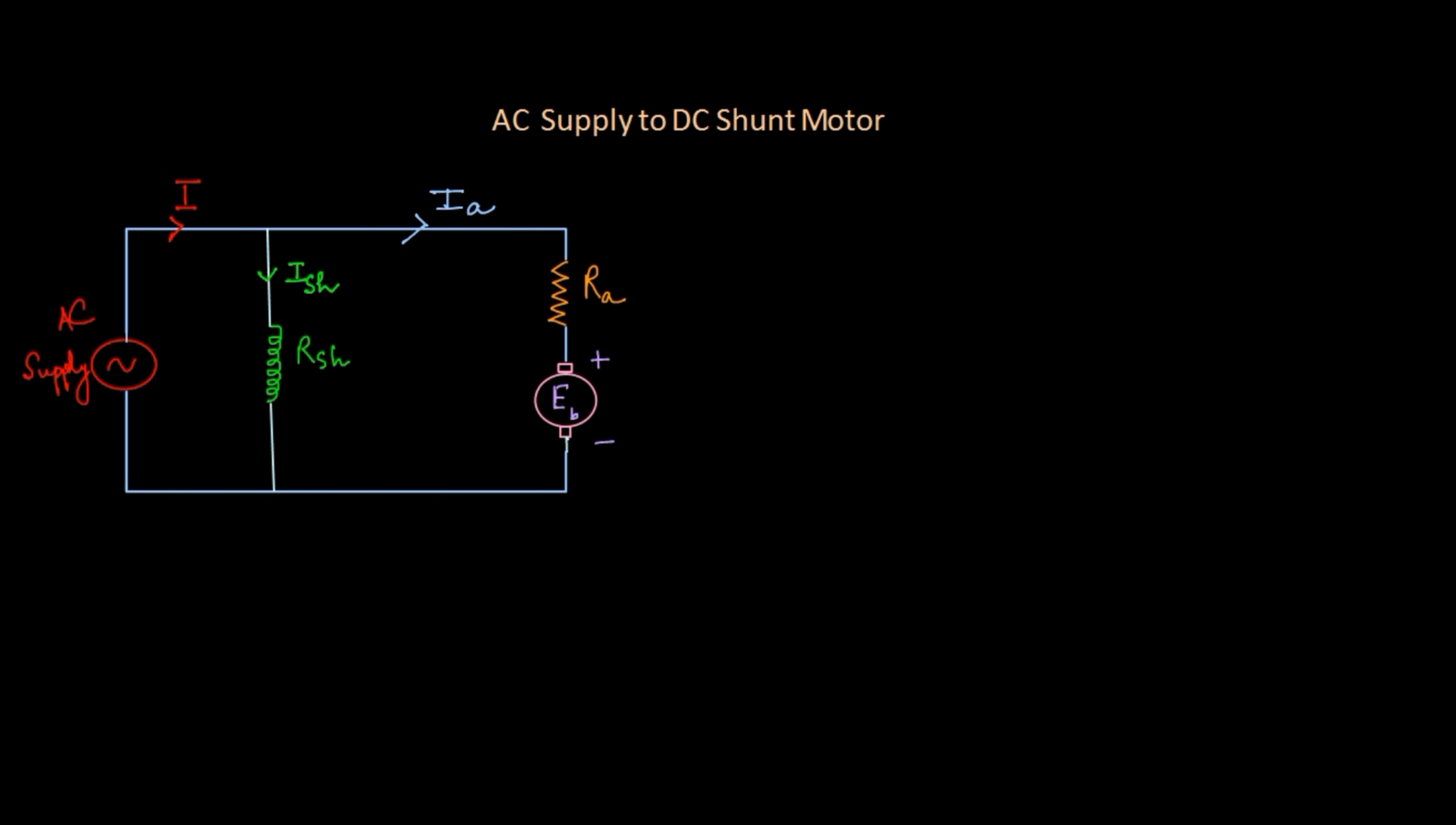In an earlier lecture I discussed why AC supply can run a DC series motor. Here we are going to understand if an AC supply is given to a DC shunt motor, will it be able to work? That means, will it be able to rotate?